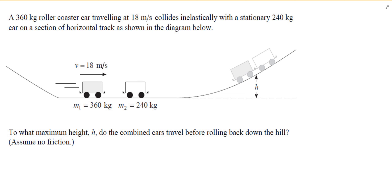Here is another collision question involving different concepts — no angles, but a very good thinking question. A 360 kilogram roller coaster traveling at 18 meters per second collides inelastically with a stationary 240 kilogram car on a horizontal track. We want to find the maximum height the combined cars reach before rolling back down, assuming no friction. This is a combo question involving conservation of momentum and the work-energy theorem.